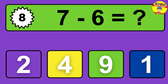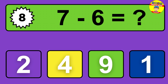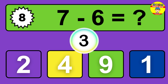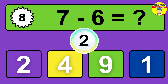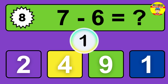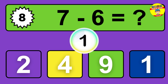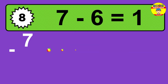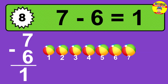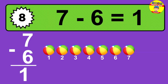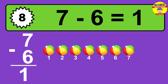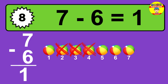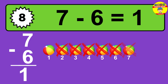Question eight: seven minus five equals what? So the answer is seven minus five is two. Let's count it — one, two.